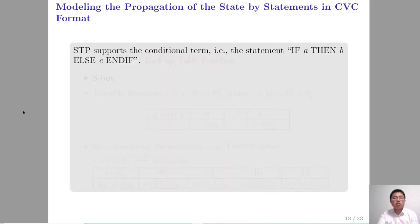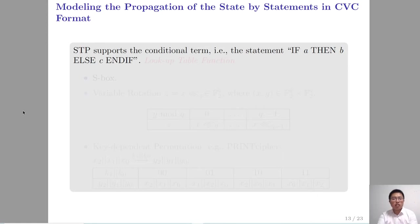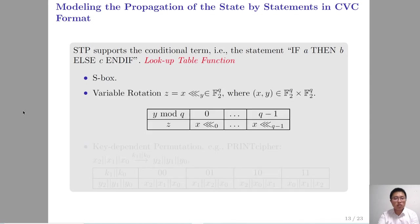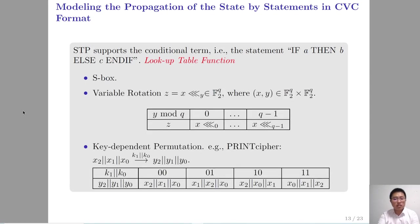STP also supports the conditional term, that is, the expression: if A then B else C, where A is a Boolean term and B and C are bit-vector terms. This construct allows us to achieve the lookup table function. Thus, we can model the propagation of data through S-boxes, variable rotation, and key-dependent permutation, as the propagation of data through those operations can be represented as a lookup table.